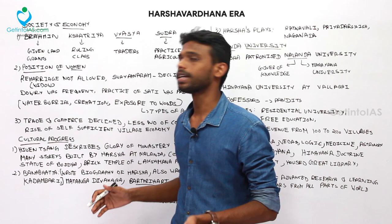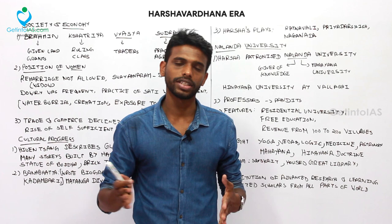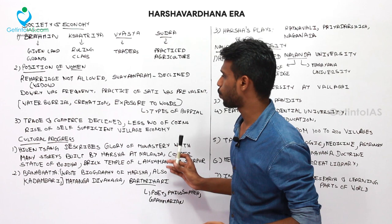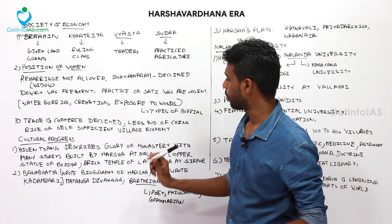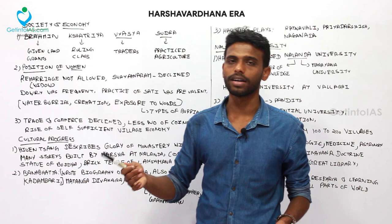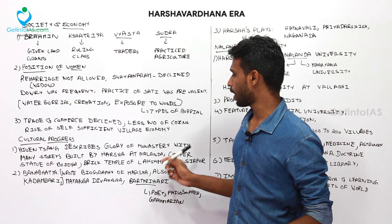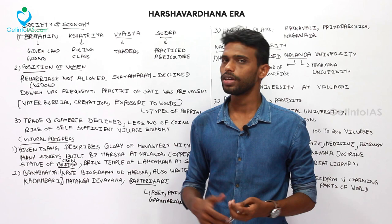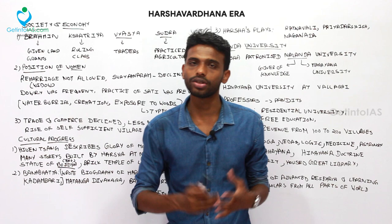Now coming to cultural progress. After Xuanzang's visit, Harsha turned into a Mahayana Buddhist and many Buddhist stupas were built. Xuanzang describes the glory of multi-storied monasteries built by Harsha at Nalanda, a copper statue of Buddha that was eight feet high, and a brick temple of Lakshmana at Sirpur. These are some of the notable architectural features of the Harsha empire.